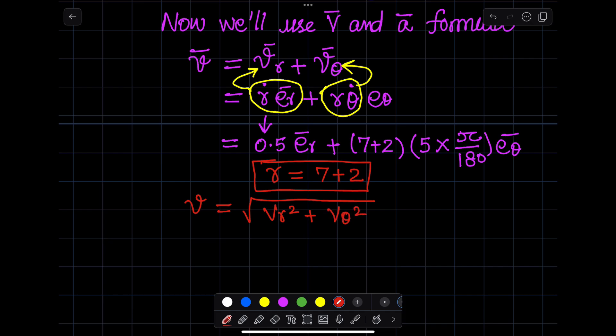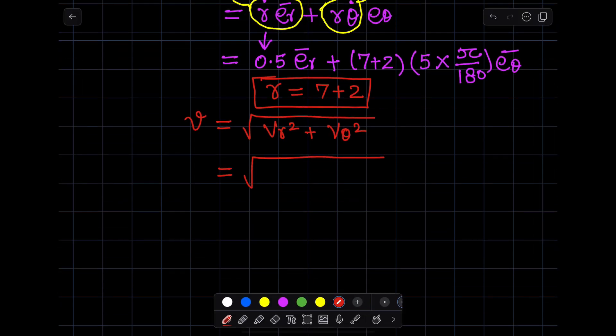You can calculate the magnitude by using the square root of vr squared plus v theta squared.